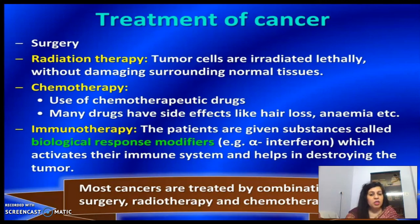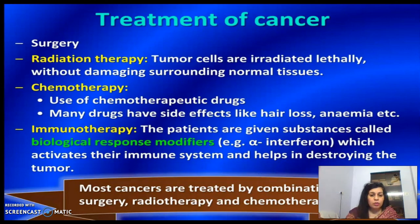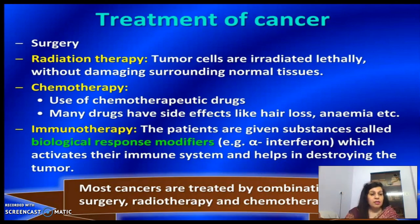Immunotherapy is another treatment where patients are given substances called biological response modifiers — for example, interferons — which activate the immune system and help in destroying the tumor. The immune system sometimes fails to identify cancer cells on its own, so biological response modifiers like interferons help the immune system identify and destroy the tumor. Normally, a combination of therapies such as surgery, radiotherapy, and chemotherapy is used, though chemotherapy can cause various side effects.